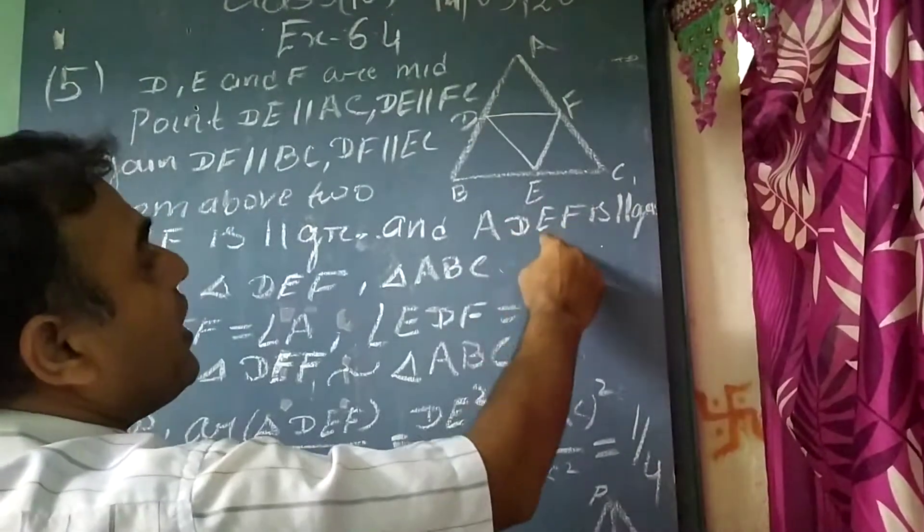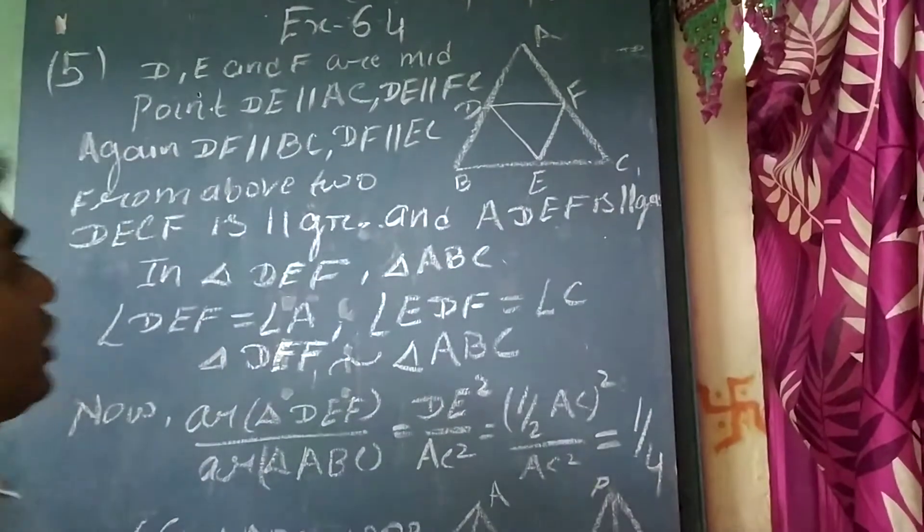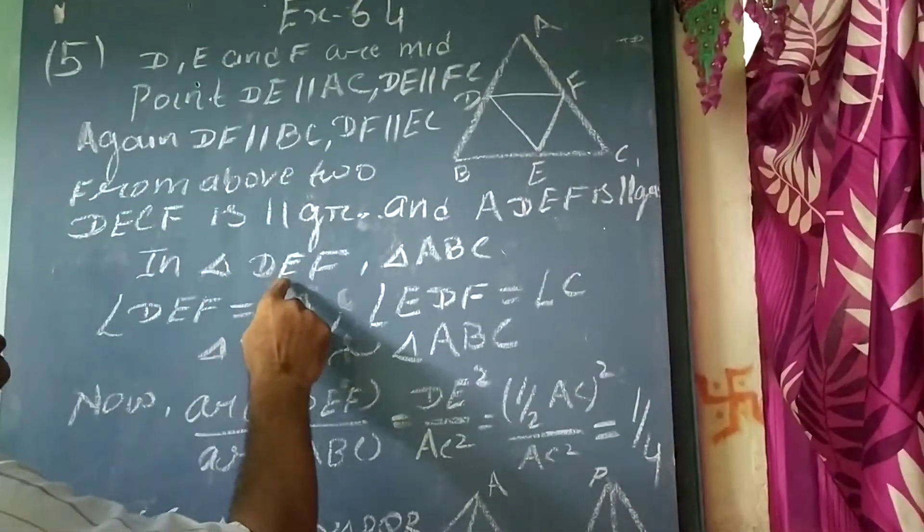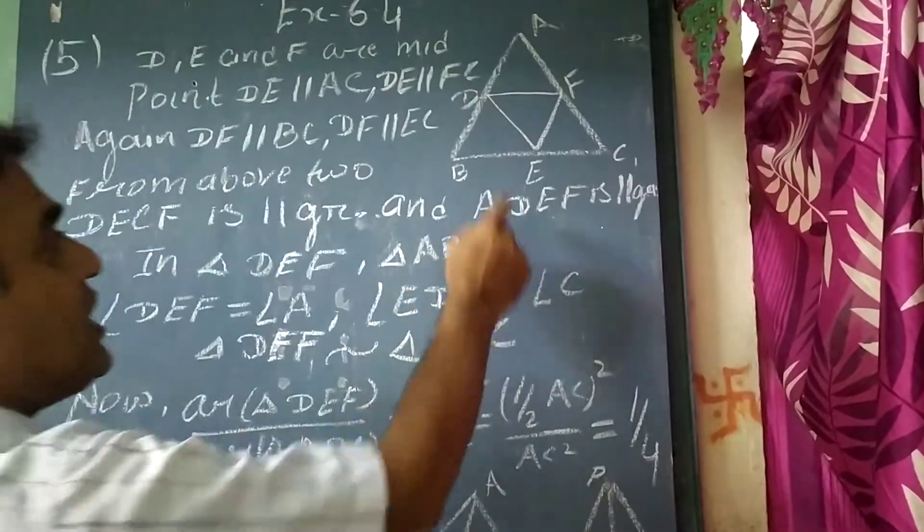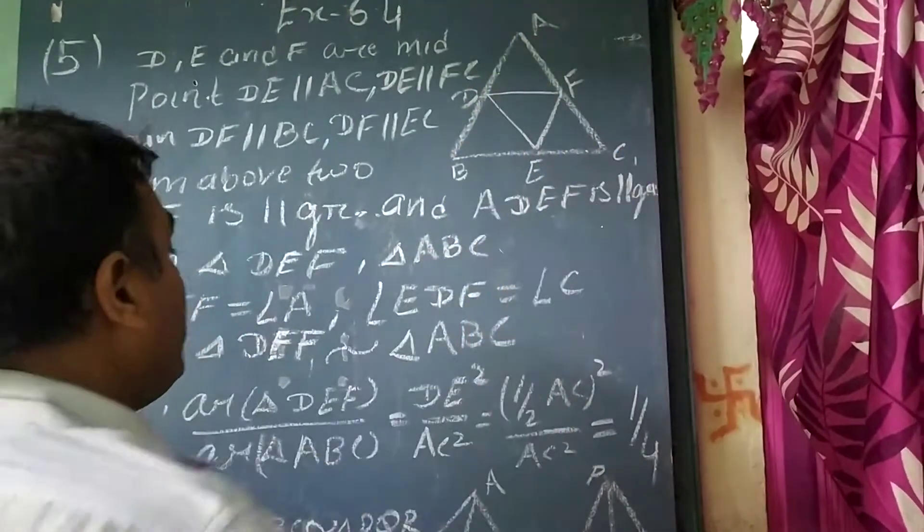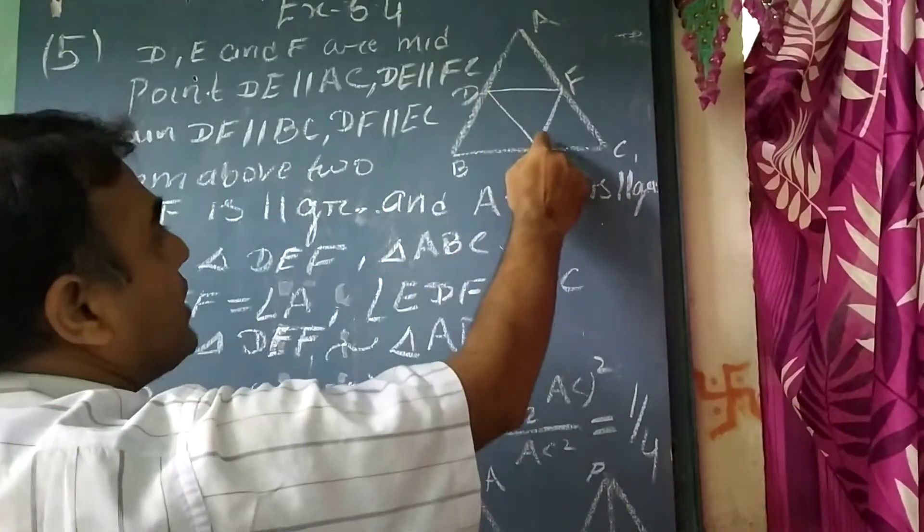Similarly ADEF is also a parallelogram. So now in triangle DEF and ABC, we have that angle DEF as...